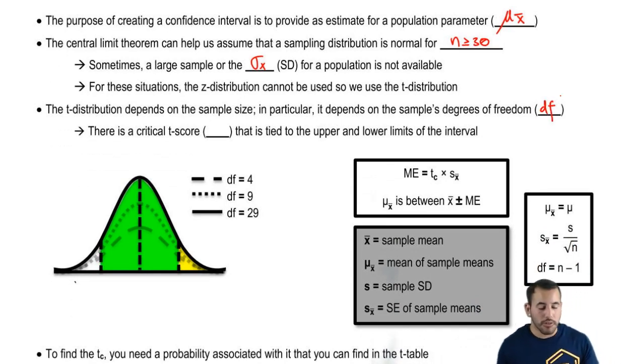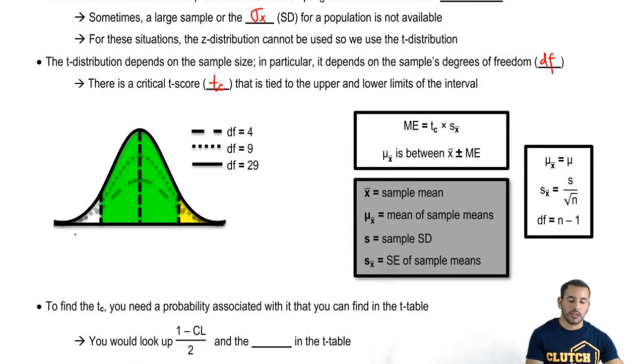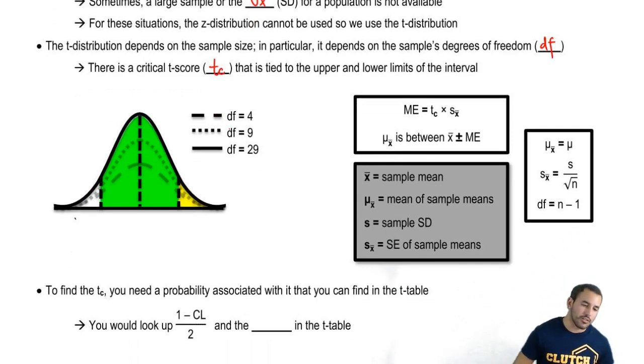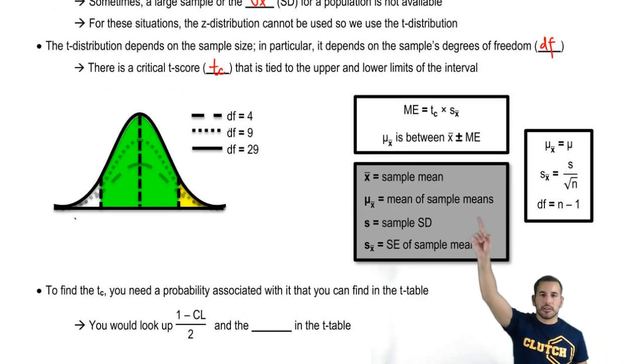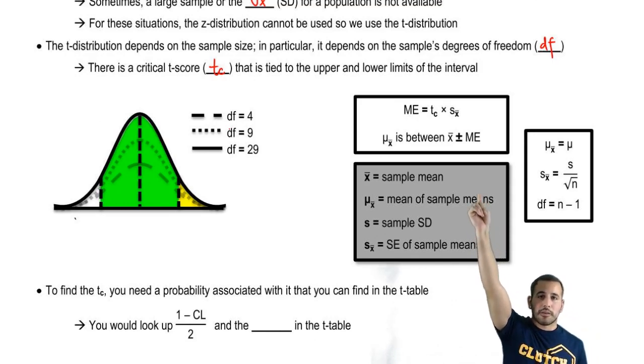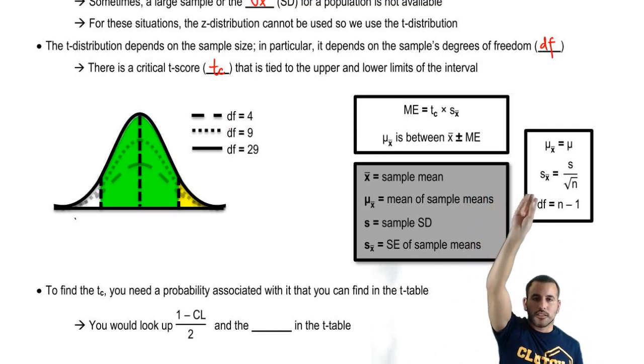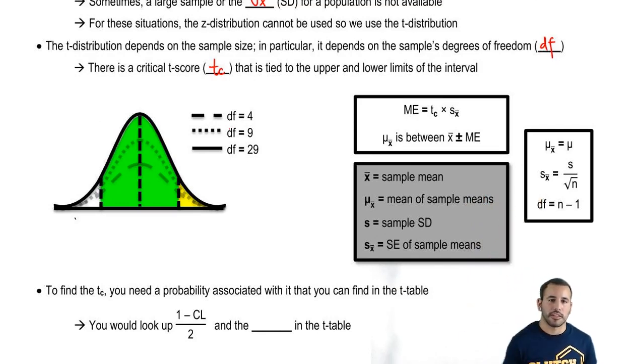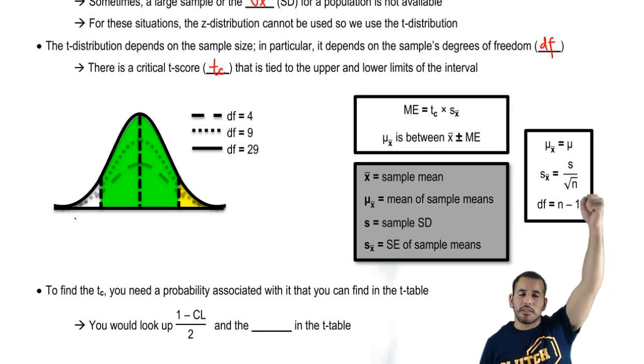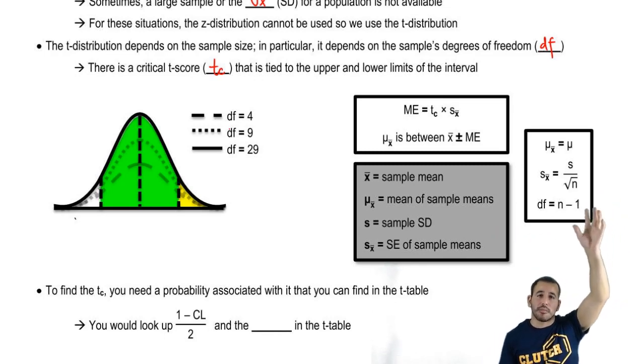There's a critical t-score just like there was a critical z-score that's tied to the upper and lower limits of the interval. So we have our margin of error is the t-critical times the standard error. And standard error for the sample standard deviation is exactly the same as we saw before. It's just the standard deviation divided by the square root of n. Degrees of freedom is just n minus 1, and that really, we only need to look up the critical t-score. And then the population mean is the mean of the sample mean.